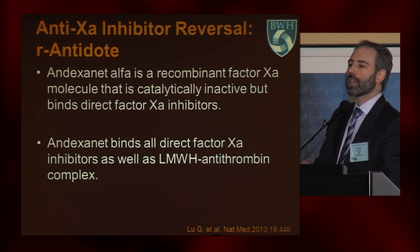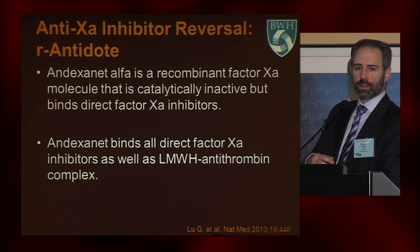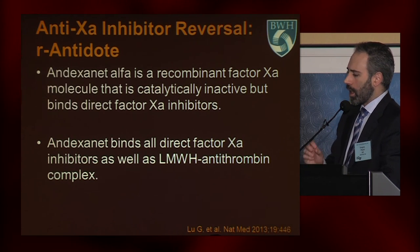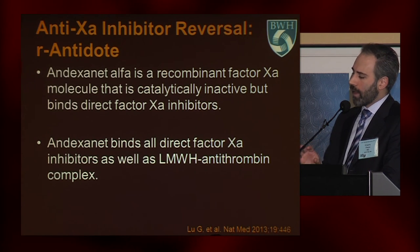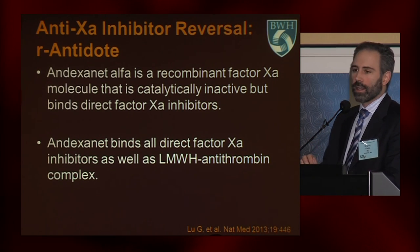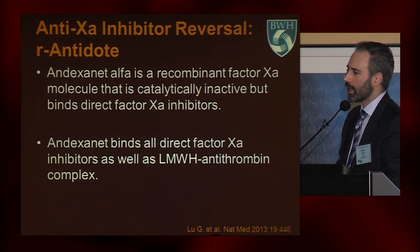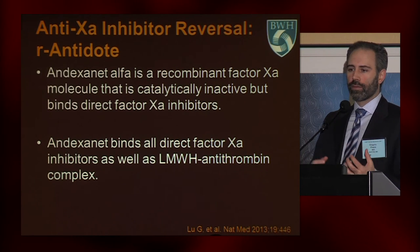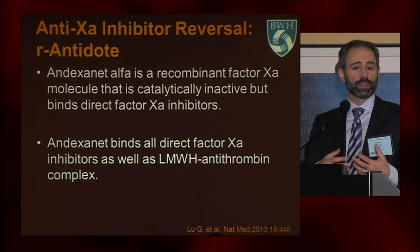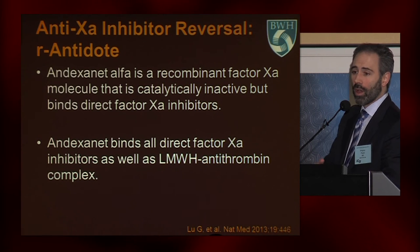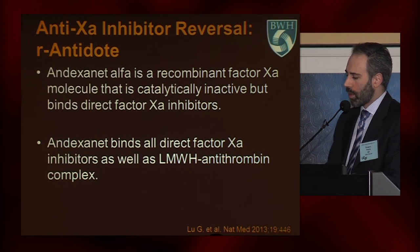For the direct Xa inhibitors — things like apixaban, rivaroxaban, edoxaban — there is this R antidote, andexanet alpha. It is a recombinant factor Xa molecule that is catalytically inactive but binds with high affinity to the factor Xa inhibitors. So it takes them out of the equation without having its own effect on coagulation, meaning you also can't make patients prothrombotic.